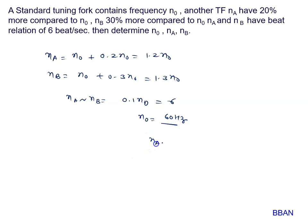Now, NA value is 1.2 N0 and 1.2 into 60 is 72 Hertz. NB value is 1.3 into N0 and 1.3 into 60 is 78 Hertz.